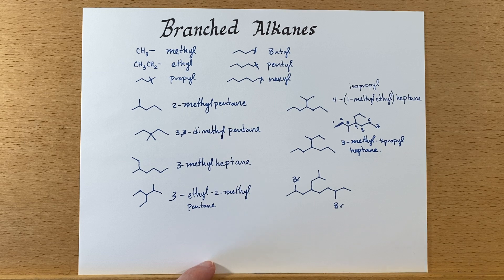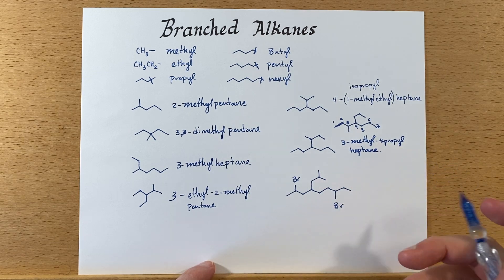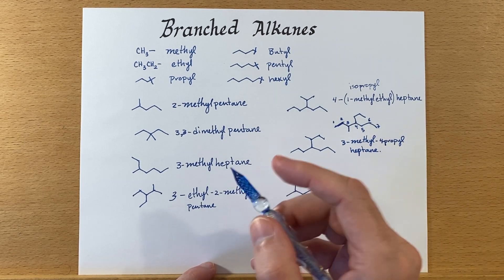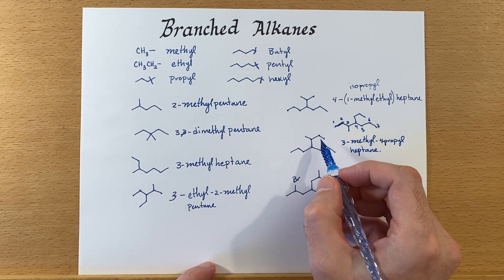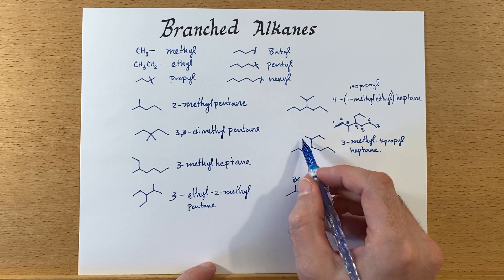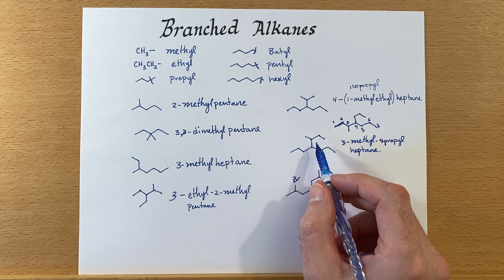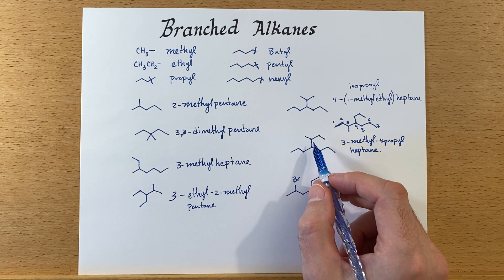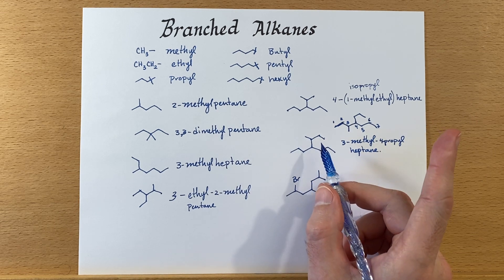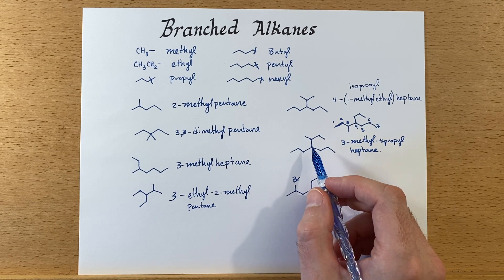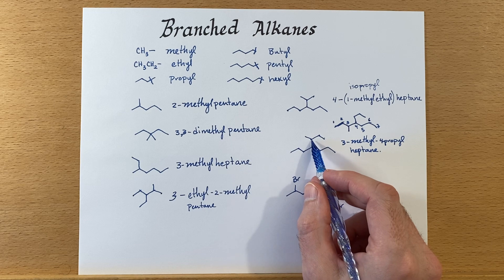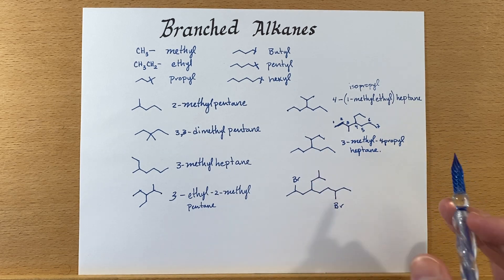By the way, as a side note: if this were named as a side chain, the 1-methylpropyl group could also be called a sec-butyl group, because it's attached at a secondary carbon.